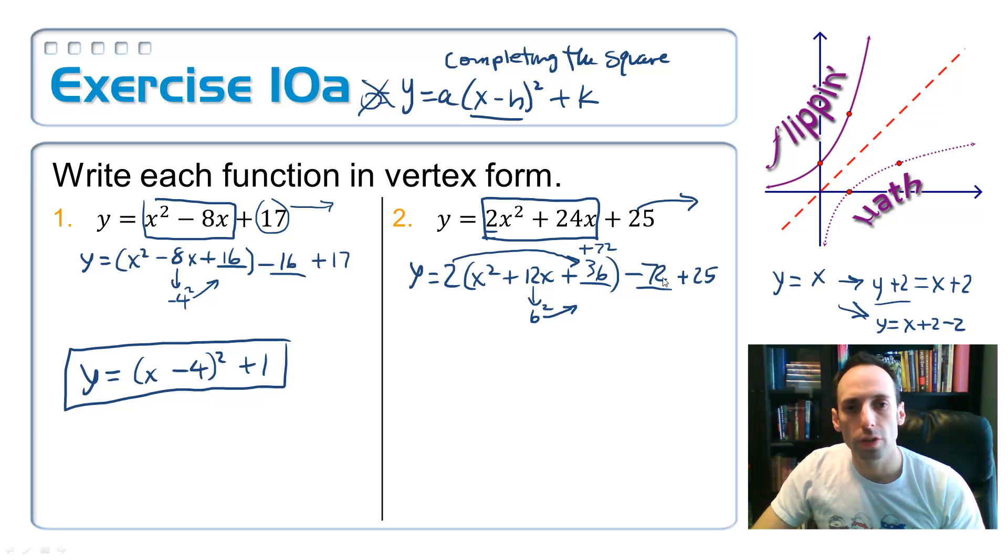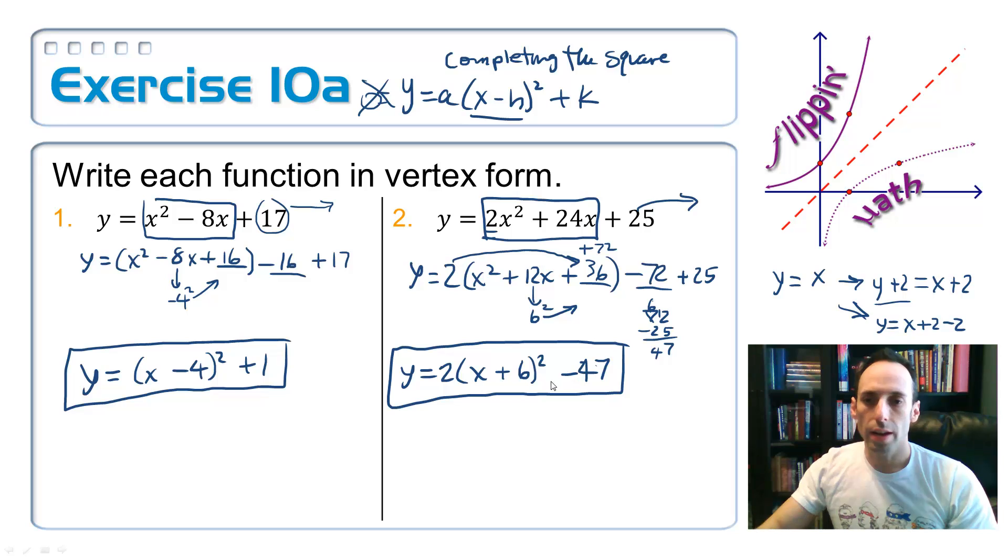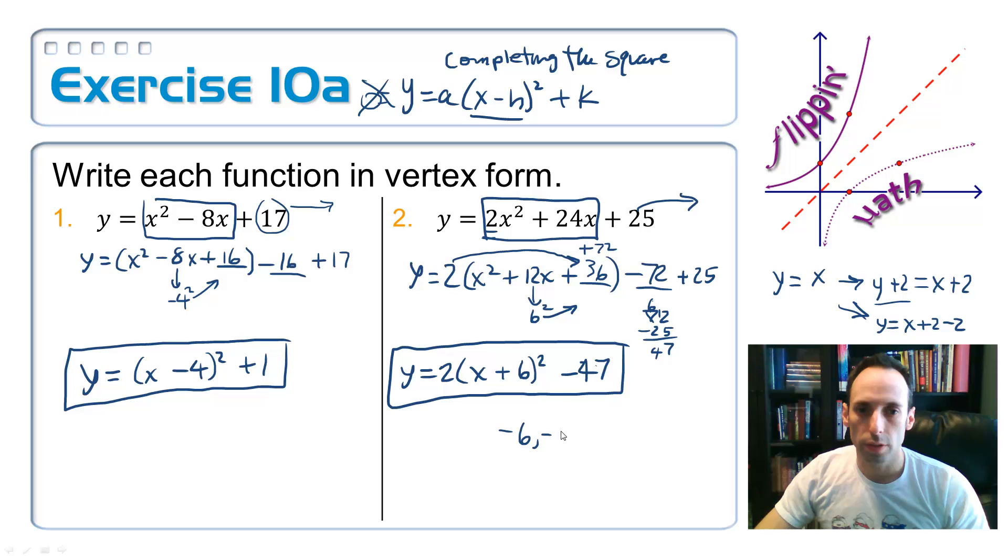Whenever you have to factor out that GCF from those first two terms, you have to distribute it back through before you subtract the number. So y is equal to 2 times parentheses x plus 6 squared, and then minus I get 72 minus 25, bring it to the 7, and this is 6, and then 47. What a weird thing, 47. So this is kind of handy because automatically you can get the coordinates of the vertex. The vertex being at negative 6 comma negative 47. Have fun graphing that one.